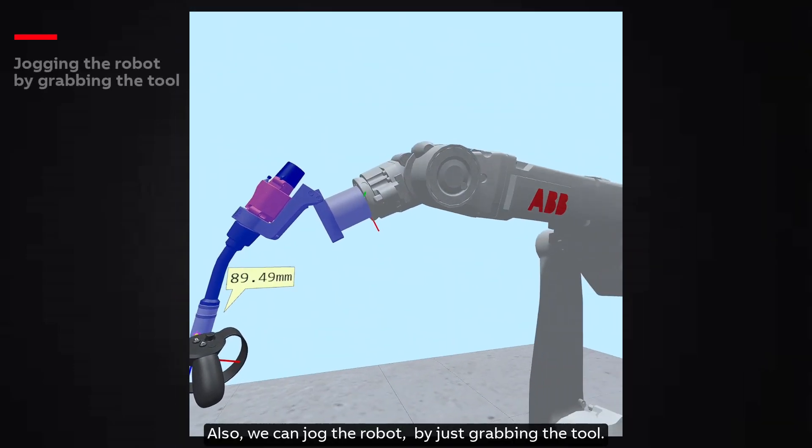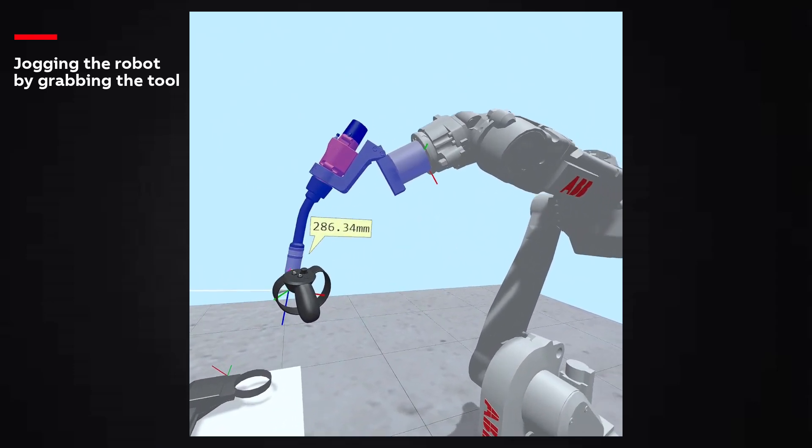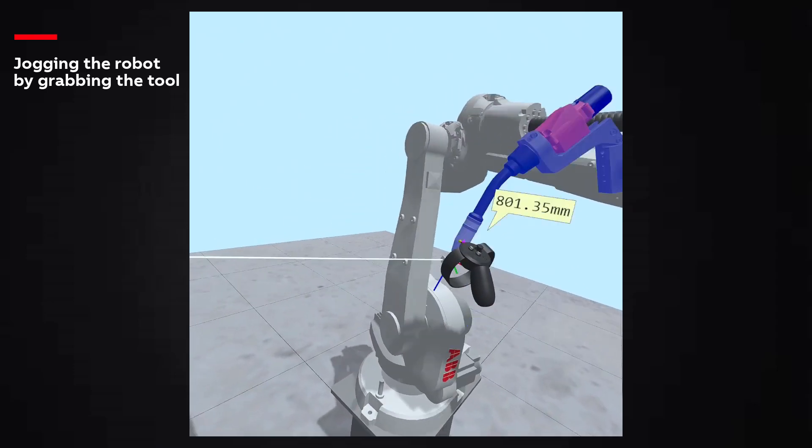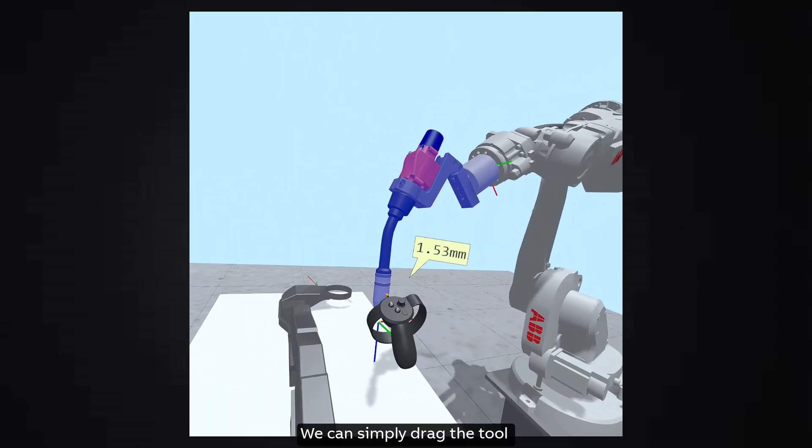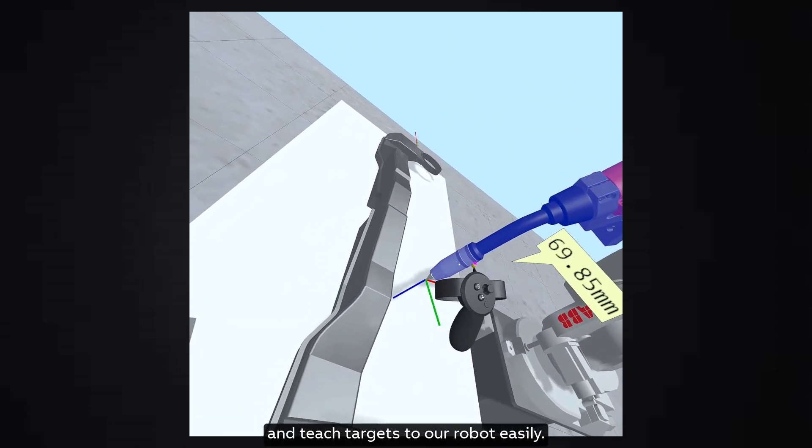Also, we can jog the robot by just grabbing the tool. It is like using the lead through functionality. We can simply drag the tool and teach targets to our robot easily.